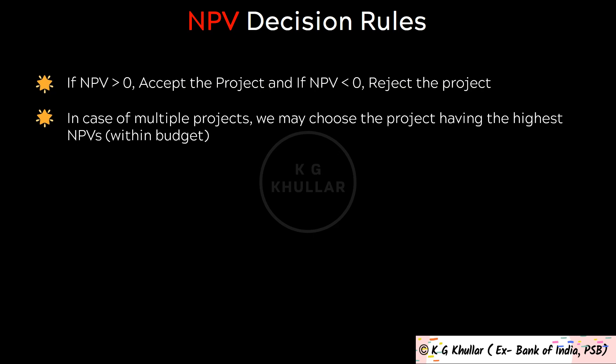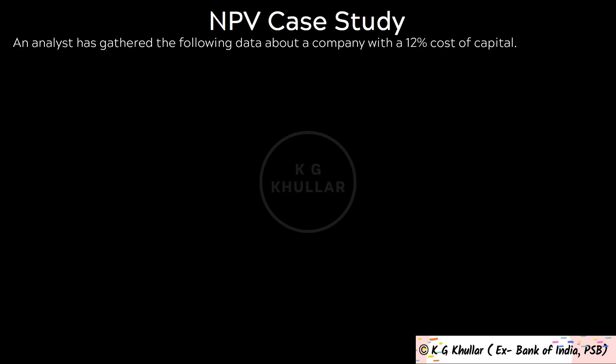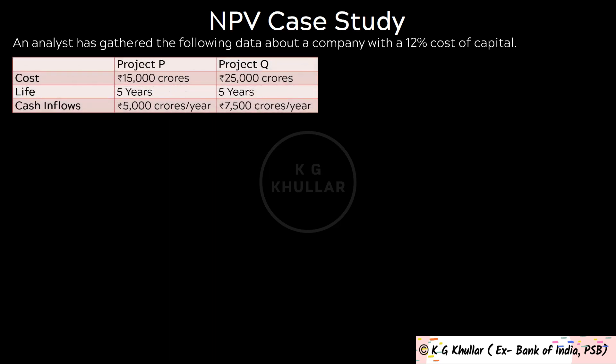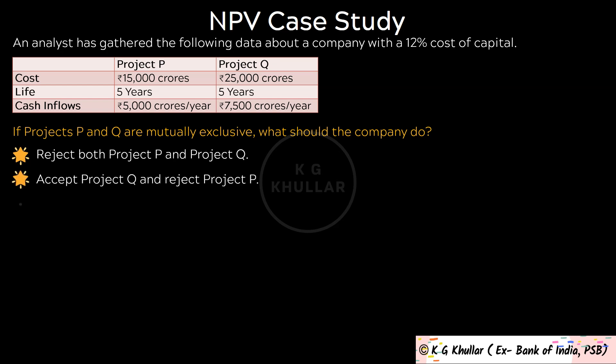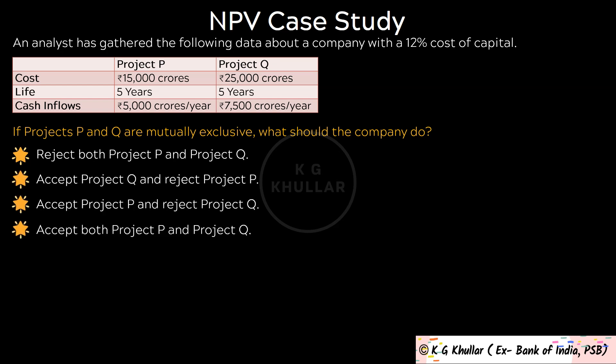Next, let's do some questions and case scenarios to master the concept. The first case scenario: an analyst has gathered the following data about a company with a 12% cost of capital. There are two projects, P and Q. Cost of project P is Rs. 15,000 crores and project Q is Rs. 25,000 crores. Life is 5 years for both. Cash inflows for project P are Rs. 5,000 crores per year and for project Q Rs. 7,500 crores per year. If projects P and Q are mutually exclusive, what should the company do?